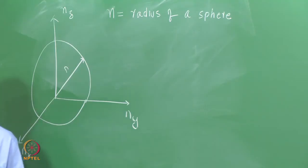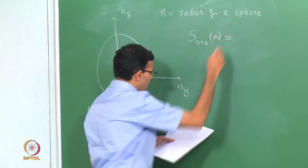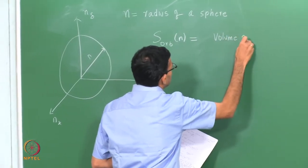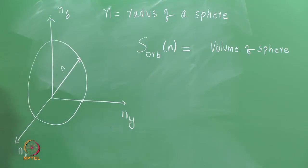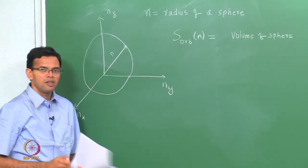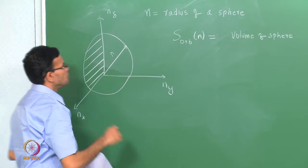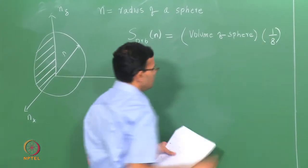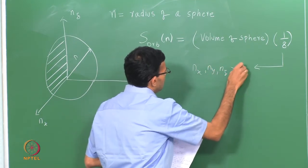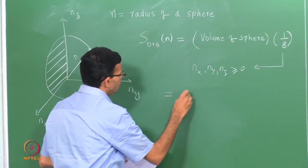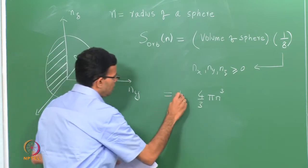If you want to find the total number of states whose energy is less than N, then the total number of states is nothing but the volume of the sphere. But since a sphere can have both positive and negative values of these quantum numbers, and since the quantum numbers are only positive, we only take the part of the sphere lying in the first quadrant. So it is the volume of the sphere times 1/8. The 1/8 arises because Nx, Ny, and Nz are all greater than 0. The volume of the sphere is 4/3 π N³, and then we have the factor of 1/8.